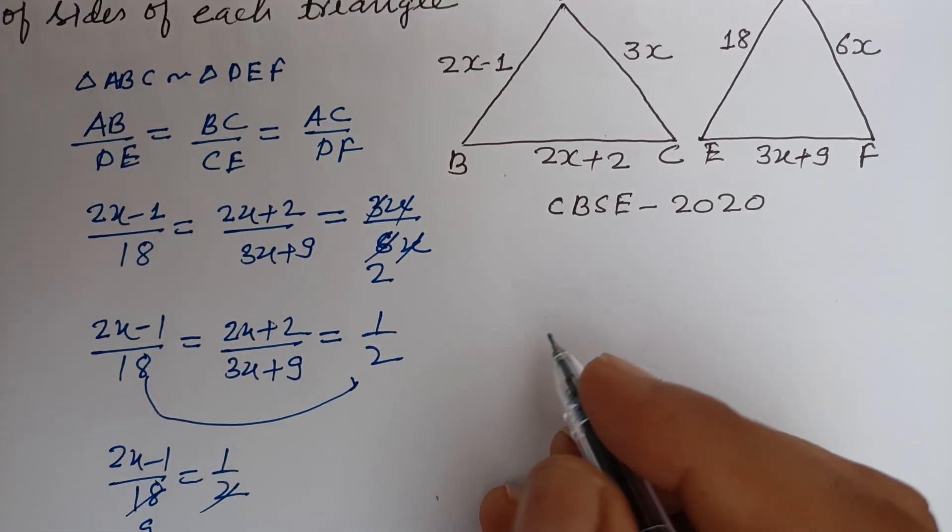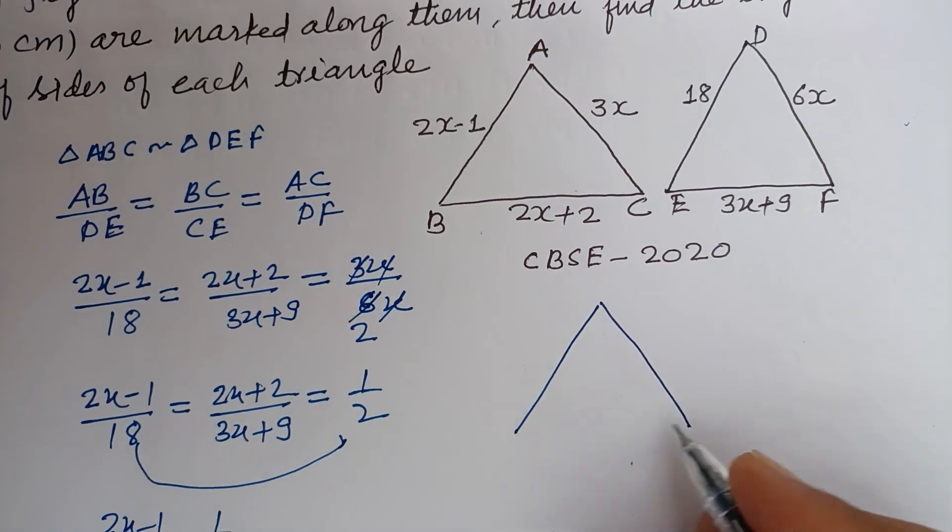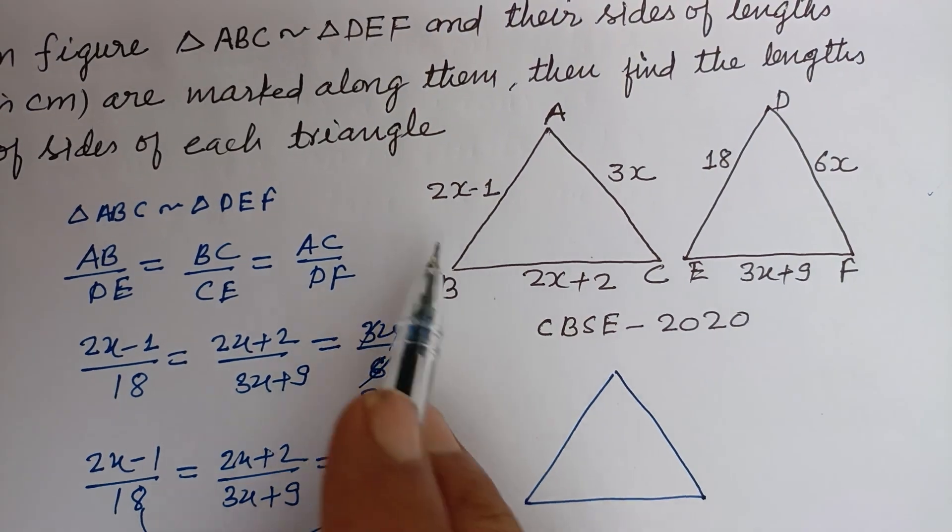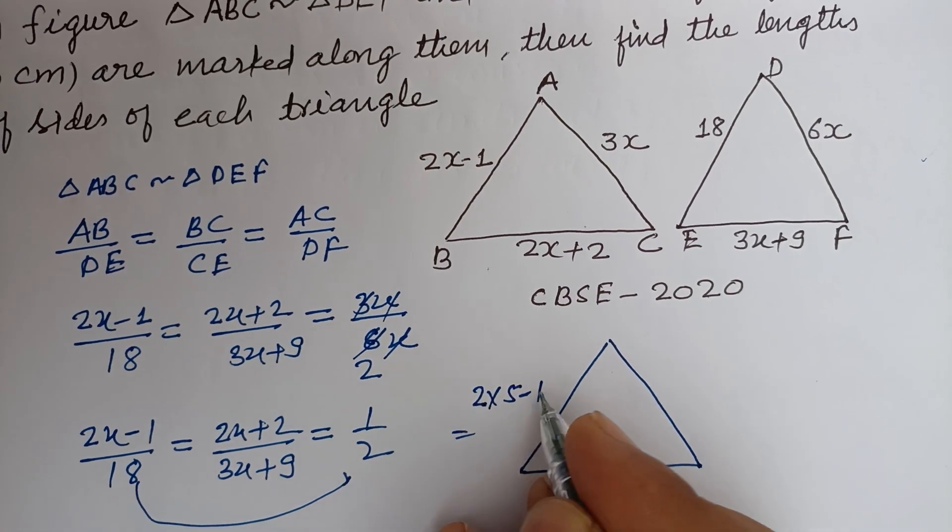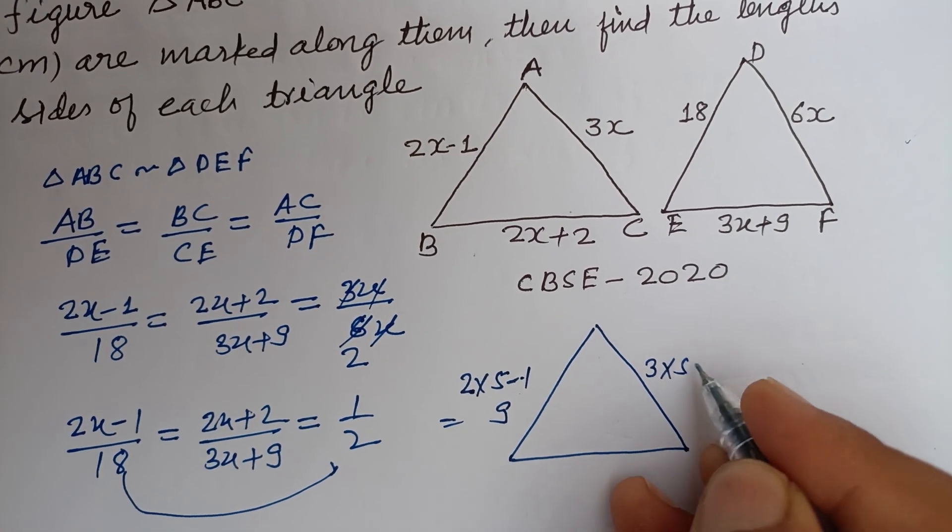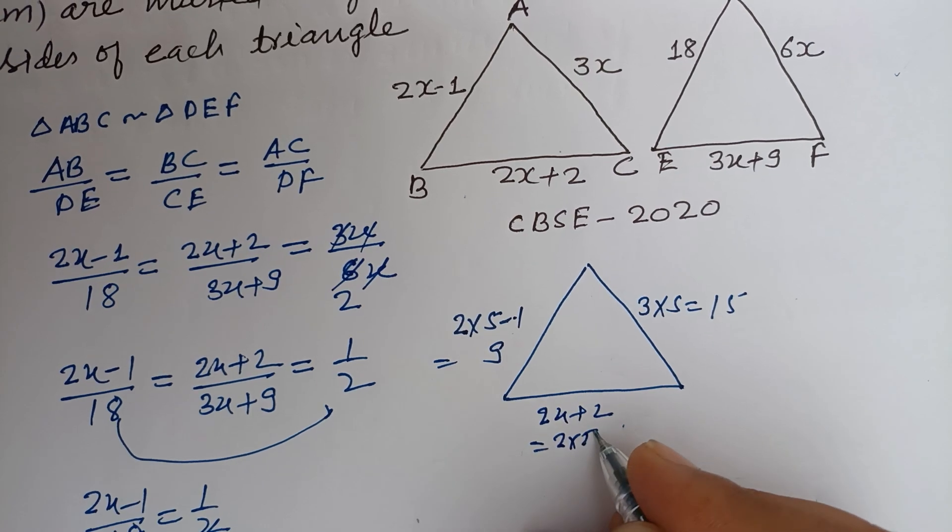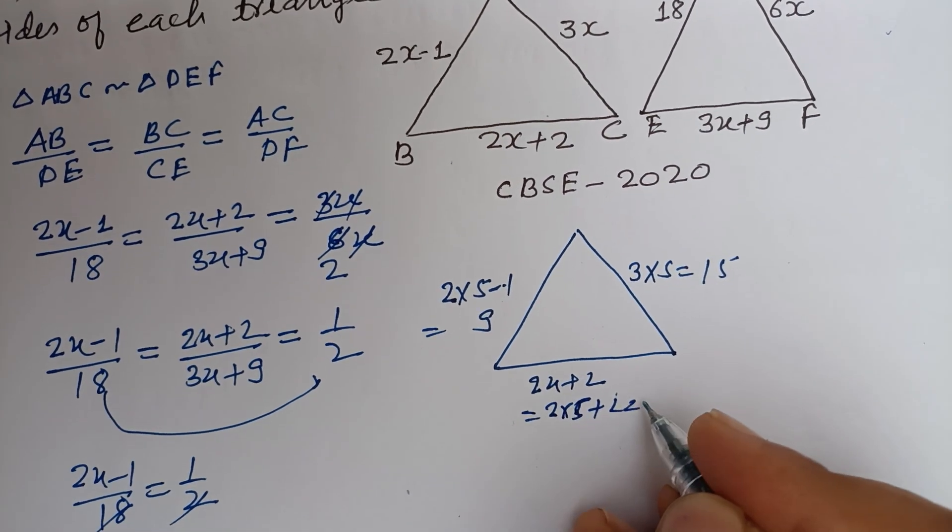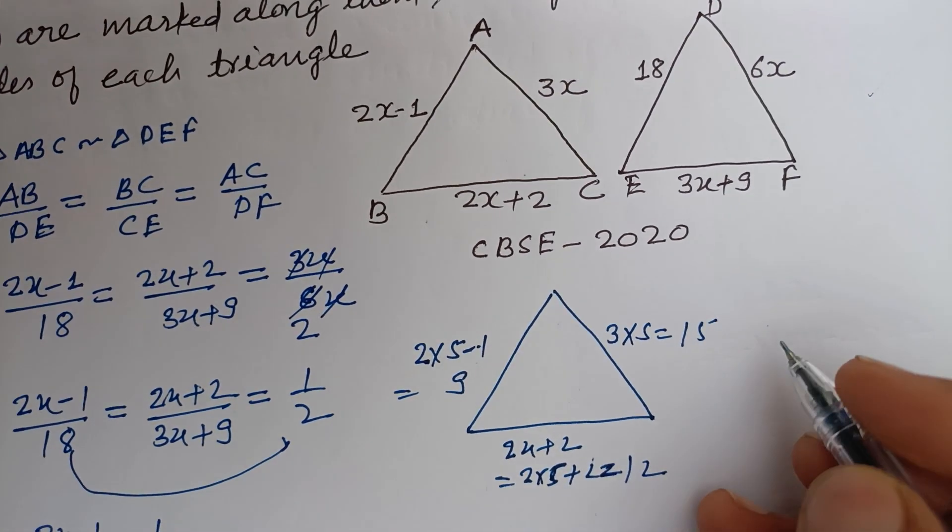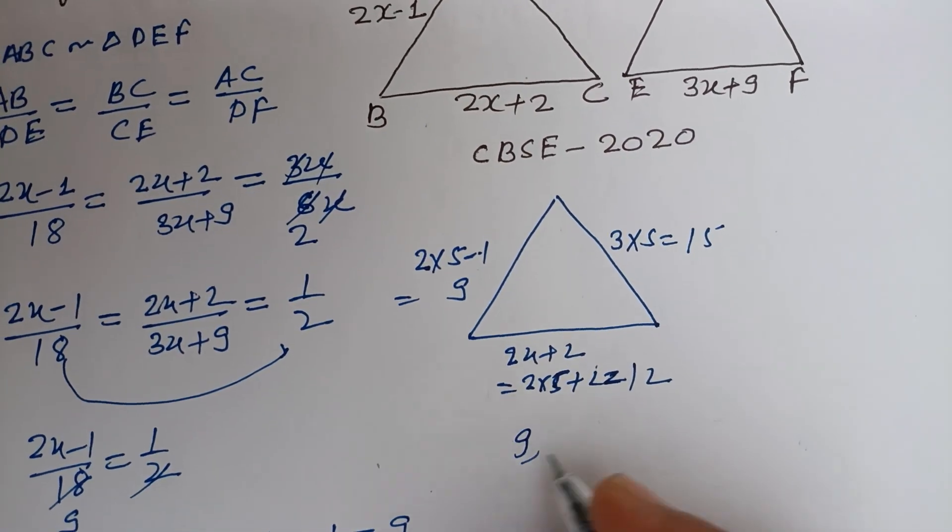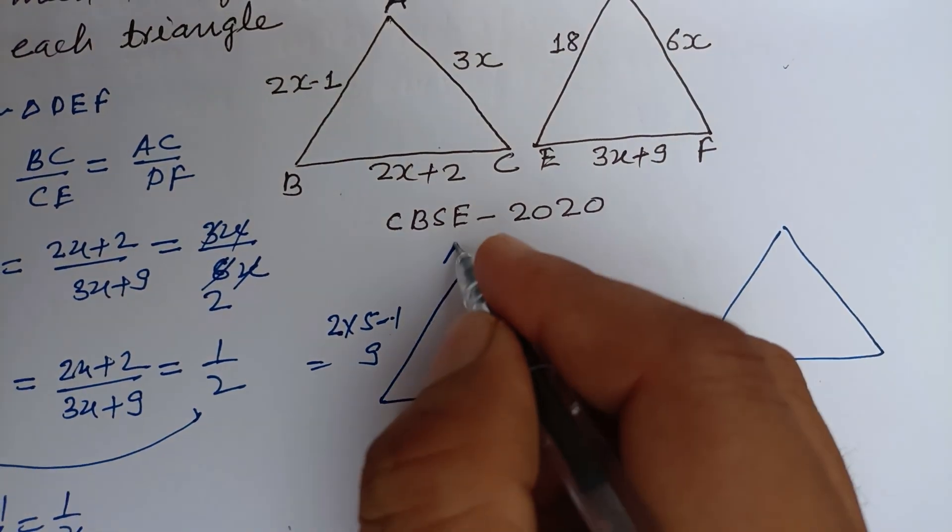Therefore x equals 5. So x equals 5. This side becomes, when we put x equal to 5, 10 minus 1, this is 9. 3 into 5, this is 15. And 2x plus 2, this is 2 into 5 plus 2, that is 10 plus 2 equals 12. So 9, 12, 15 is the side of first triangle ABC.